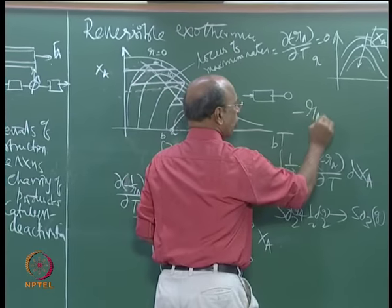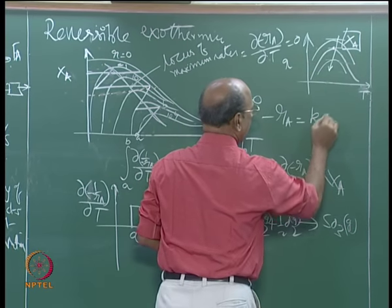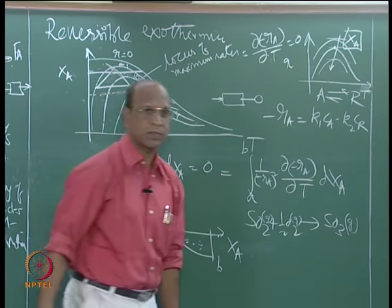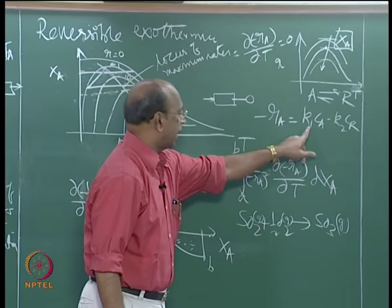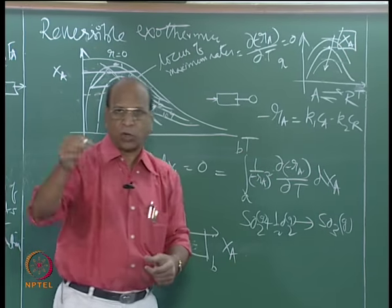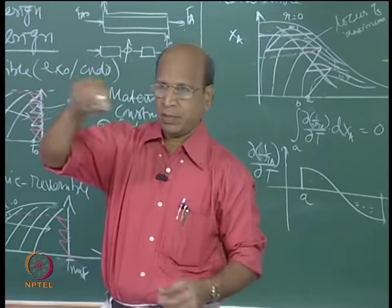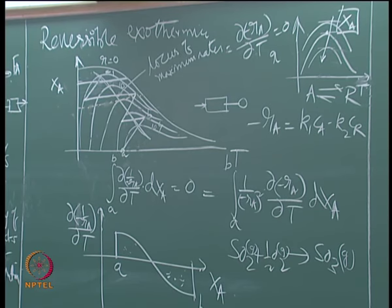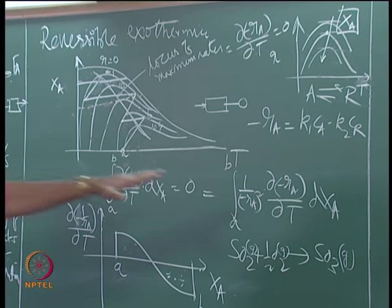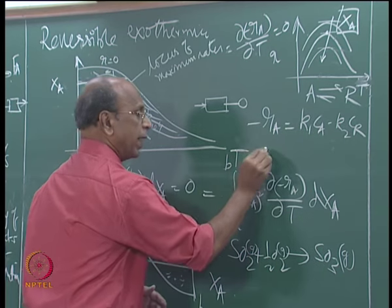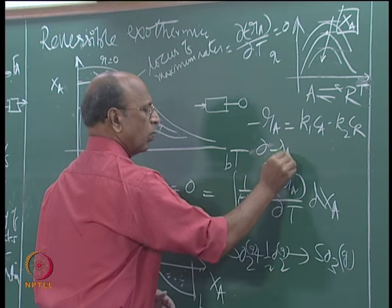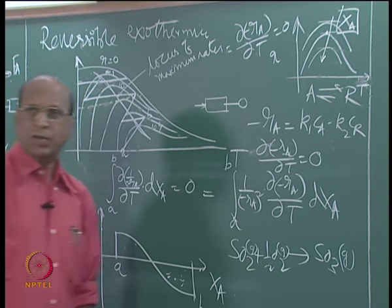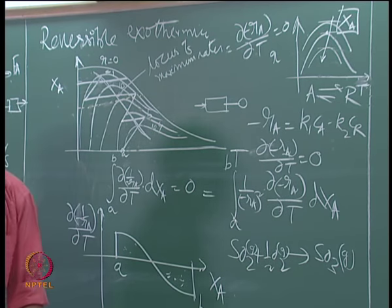For the mathematical derivation: -r_A = K₁·C_A - K₂·C_R, and ∂r/∂T — because K₁ = K₁₀·e^(-E₁/RT) and K₂ = K₂₀·e^(-E₂/RT) — you differentiate that expression. Setting ∂R/∂T = 0 gives you the locus of maximum rates. That differentiation can be given as an examination problem.